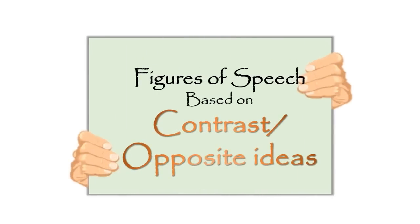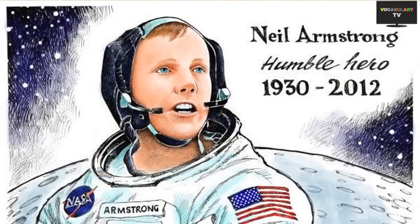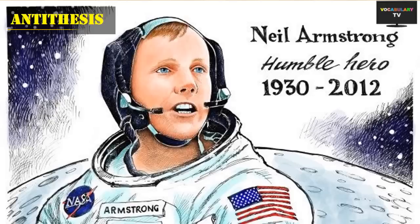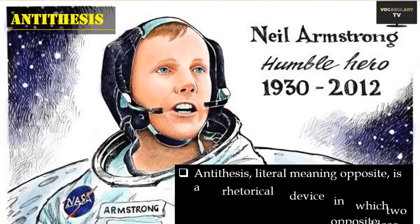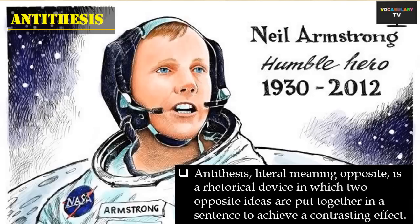First, let's cover the figures based on contrast or opposing ideas juxtaposed together. The first figure based on contrast is antithesis. As a literary device, antithesis is whenever two opposite ideas are put together in a sentence to achieve a contrasting effect.